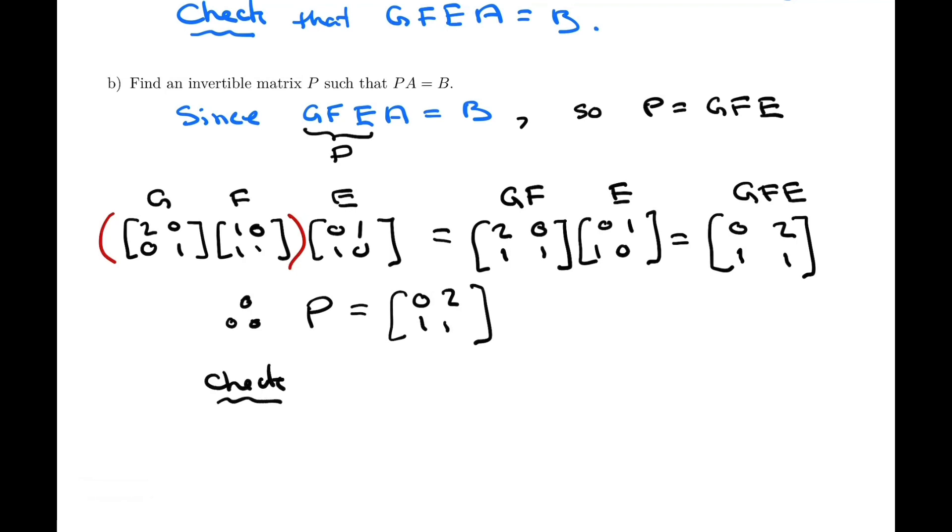And here, again, it'd be a good idea to always check that it's the right matrix by simply multiplying. It's supposed to be P times A equals B. So that's a quick multiplication. We can actually check it. 0, 2, 1, 1, times the matrix A, which is 2, 1, 1, 0, 5, minus 2.